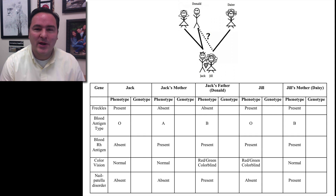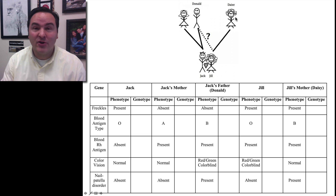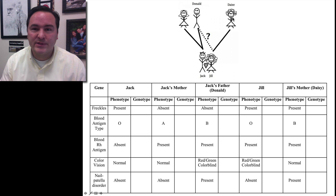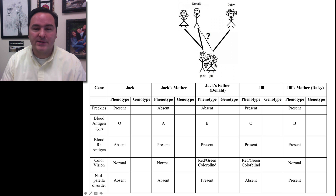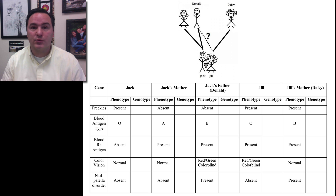Let's come back to our story of Jack and Jill. Recall that they want to get married, but Jack's father was a sperm donor and could have been the potential father of Jill, because Daisy received the sperm that created her daughter from this sperm bank. We're trying to figure out: could Donald be Jill's father? To do this, we're going to look at multiple lines of evidence to see if any of these rule Donald out as being the father of Jill.